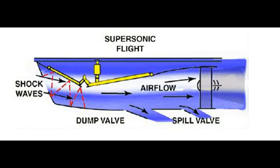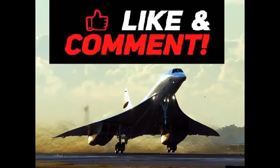As aircraft speed increases, the compression provided by the engine becomes relatively minor, and there is no need for complicated anti-surge devices — devices to stop pressure fluctuations in the compressor that can lead to damage and engine failure. The modest pressure rise over each of the compressor stages is such that control of fuel flow alone provides sufficient safeguards against surge.